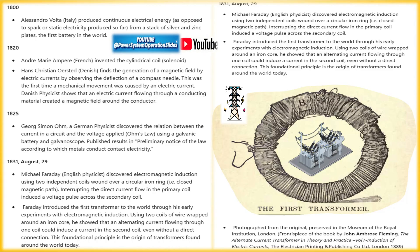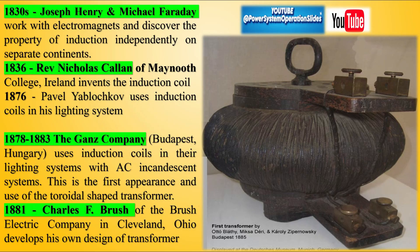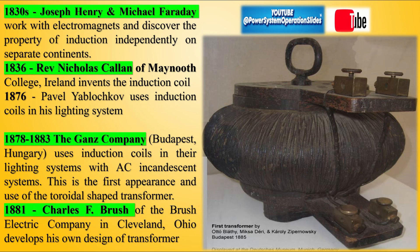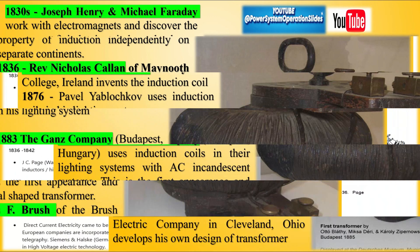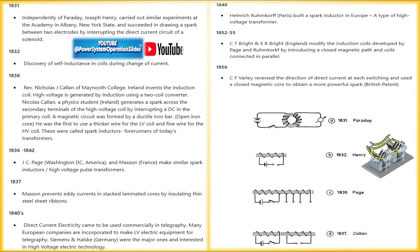The first practical power transformer was developed by Otto Blathie, Miksa Dury, and Karolyi Zypernowski, engineers at the Gans Works Company in Hungary. In 1885, they introduced the closed-core transformer, which utilized a soft iron core to enhance the efficiency of electromagnetic induction. This design allowed for the efficient stepping up and stepping down of voltage levels, making it possible to transmit electrical power over longer distances with reduced losses.